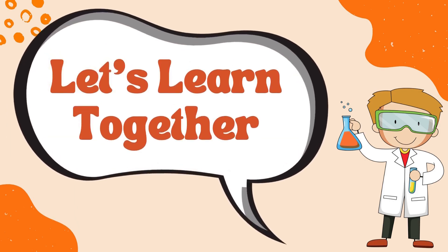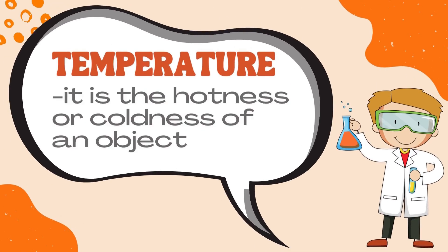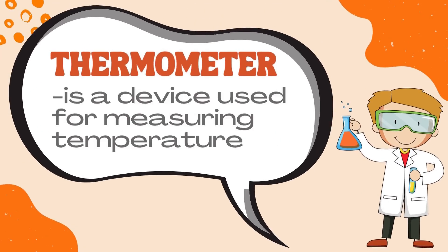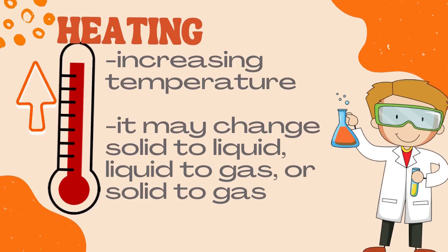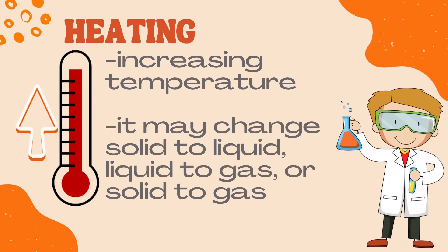Now, let's learn together! Describe changes in properties of materials when exposed to different temperatures. Temperature — it is the hotness or coldness of an object. Thermometer — it is a device used for measuring temperature. Heating may change solid to liquid, liquid to gas, or solid to gas.